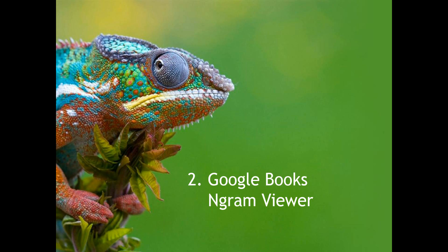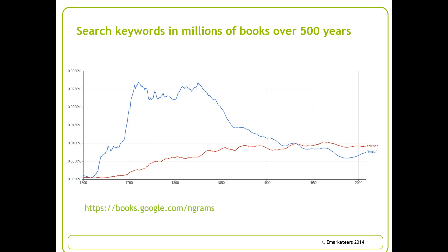The next tool is Google's Books N-gram Viewer — a fantastic tool for doing research. Not a lot of people know about this, but it has an absolute plethora of information. It can be accessed at books.google.com/ngrams — I'd go to it after today's webinar so you don't get distracted. Google indexes literally millions of books — digital versions — and has indexed all of these books over 500 years, from around 1500 to the present year 2014.